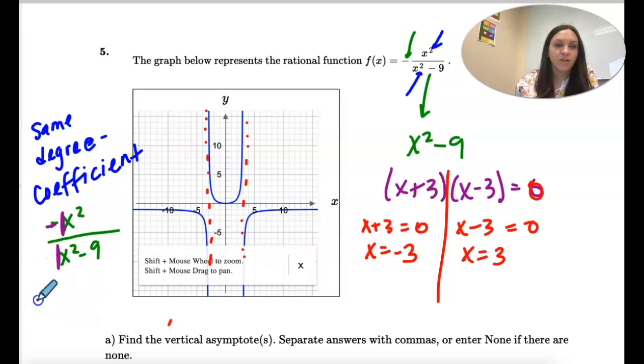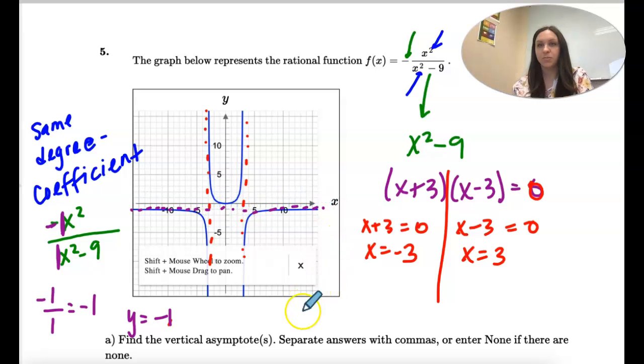So the coefficients are negative 1 over positive 1, which simplifies to negative 1. So y equals negative 1 right here is our horizontal asymptote.